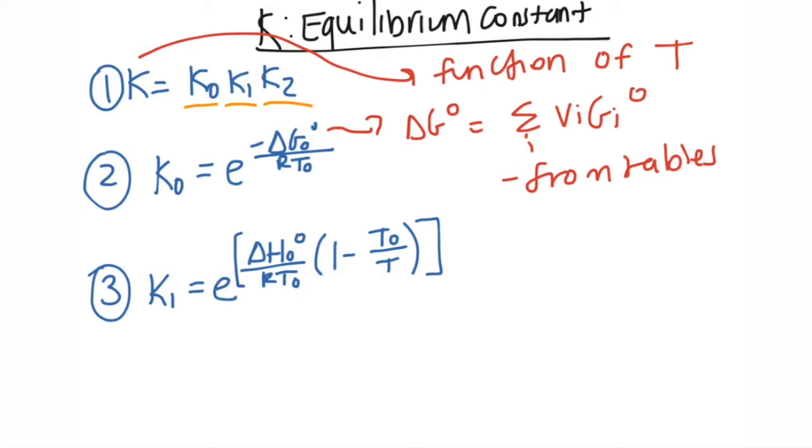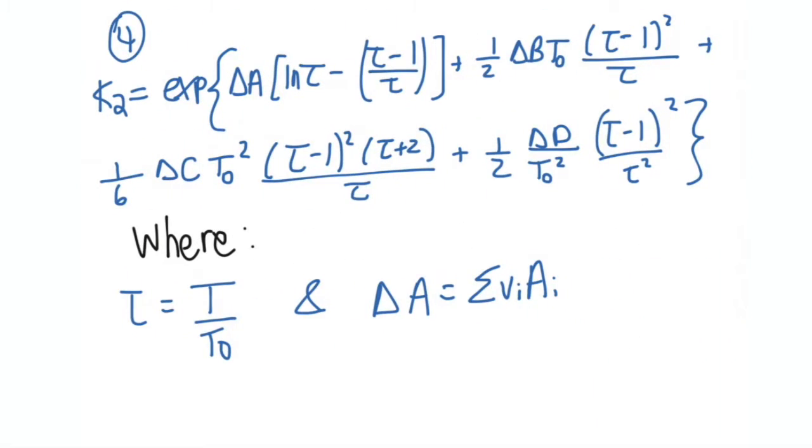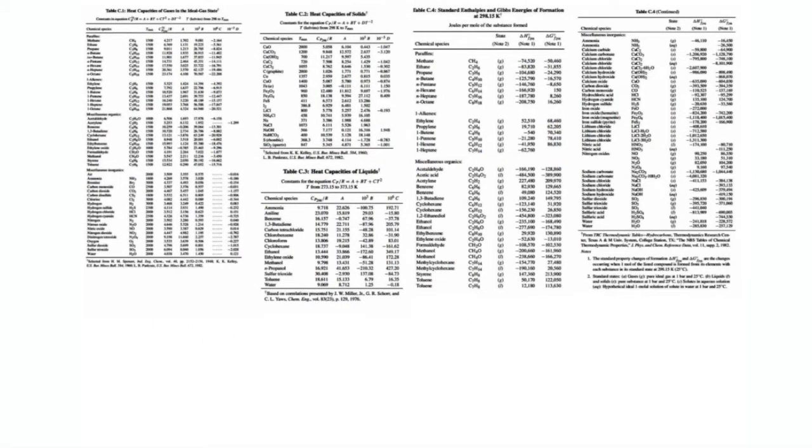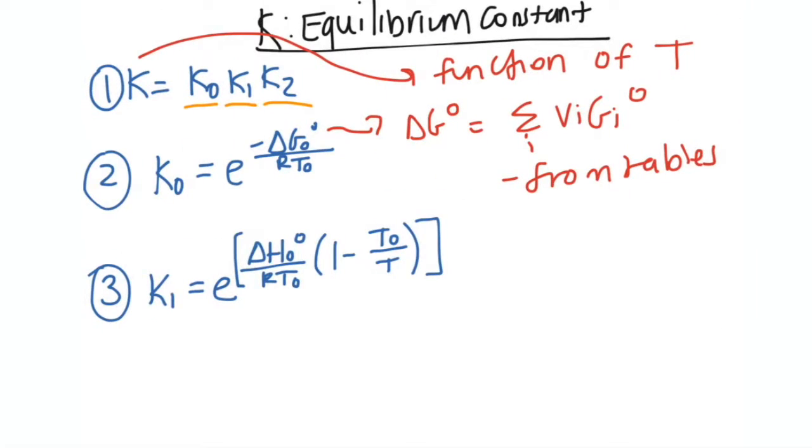So you're going to be looking at your specific species and then you're going to go to your table and find that change in Gibbs. And the ν that you just saw, I'm going to get into that later, but it's really just the coefficient in front of your species in the chemical reaction. I'll give you an example later of that ν.